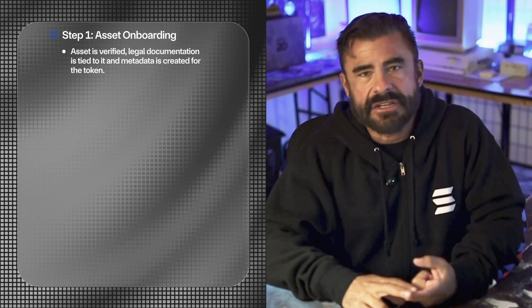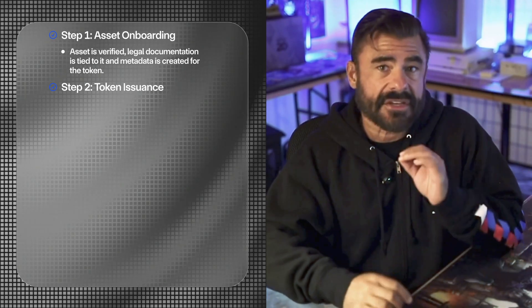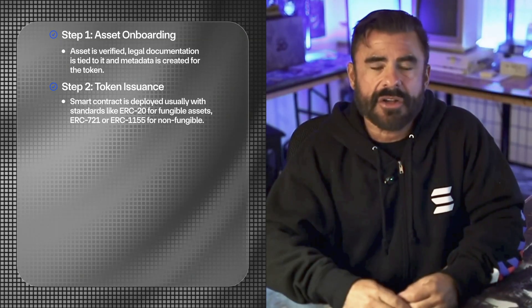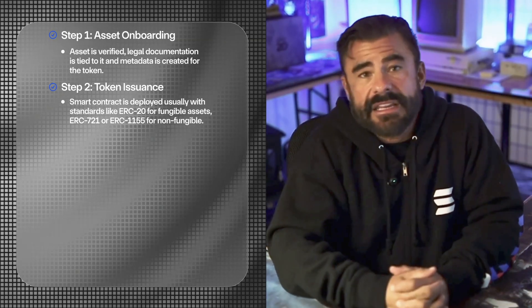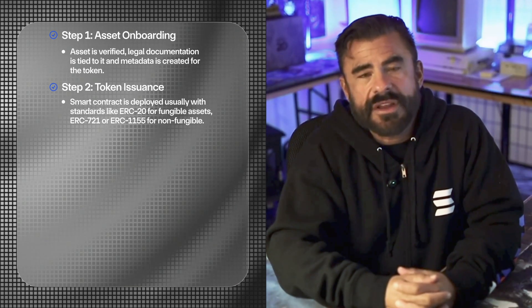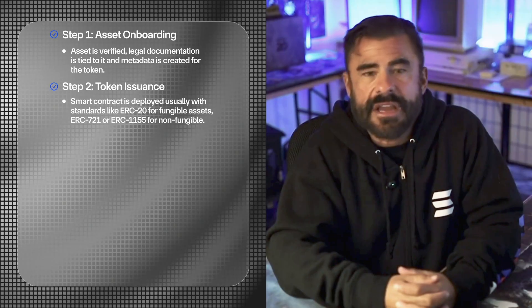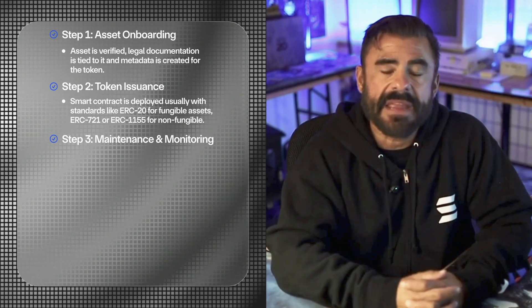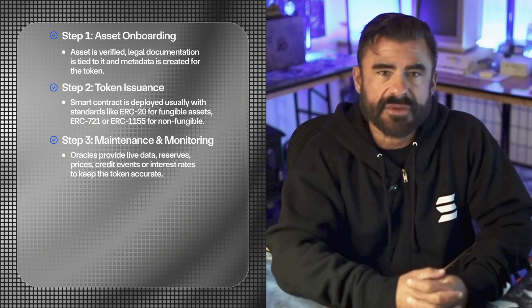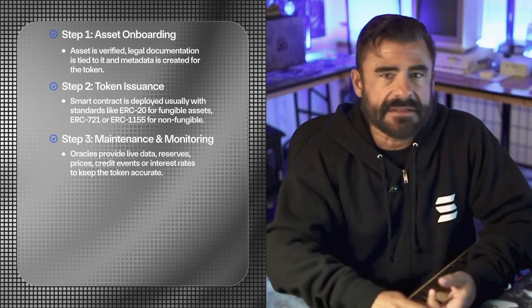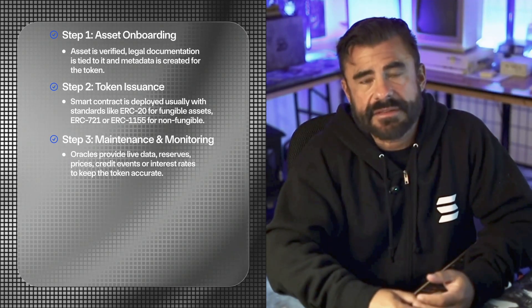Now let's look at the life cycle of a tokenized asset, the full workflow from onboarding to redemption. Step one is asset onboarding: the asset is verified, legal documentation is tied to it, and metadata is created for the token. Step two is token issuance: a smart contract is deployed, usually with standards like ERC-20 for fungible assets, ERC-721 or 1155 for non-fungibles. Step three is maintenance and monitoring: oracles provide live data — reserves, prices, credit events, or interest rates — to keep the token accurate.